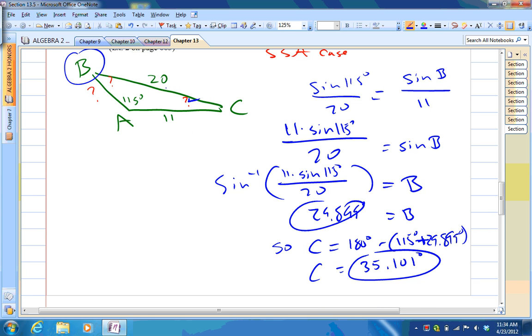And then lastly, we've taken care of these two. To get side C. So, sine of 35.101 degrees over side C will equal sine 115 degrees over 20. So, I'll let you work that on your own and tell me what you get. Hopefully, you got 12.689. And that would be correct if you got that.